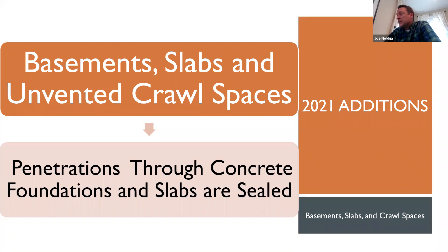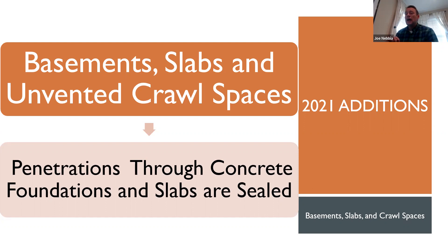One of the additions in the 2021 code: there are additional details in the air barrier installation table, one of which is that basements, slabs, and vented and unvented crawl spaces have to be sealed anywhere there's a penetration in the foundation or slab. The code already requires sealing any penetrations, but now these penetrations are specifically called out. In case anybody had a question about a pipe running through the slab, the code says yes, you do have to air seal it.